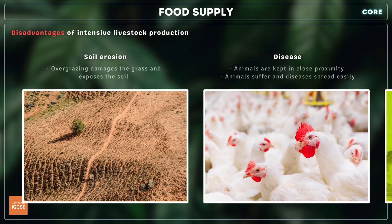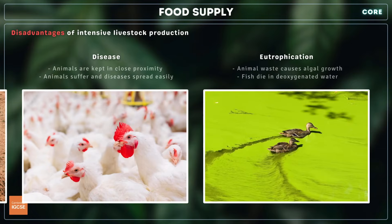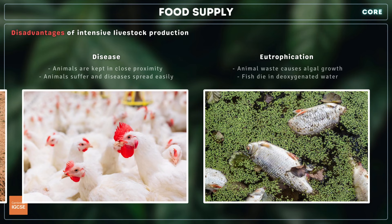However, intensive livestock production may lead to overgrazing of the land and soil erosion, while keeping animals in close proximity restricts their movements, raises stress levels and makes them more vulnerable to the spread of disease. In addition, when animal waste finds its way into streams and rivers, it supplies an excess of nutrients to microscopic algae in the water. This leads to eutrophication, whereby oxygen levels in the water fall and many species are unable to survive.